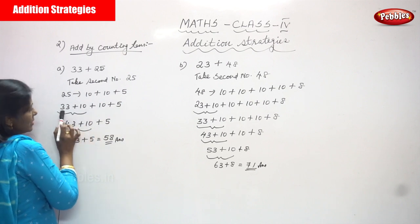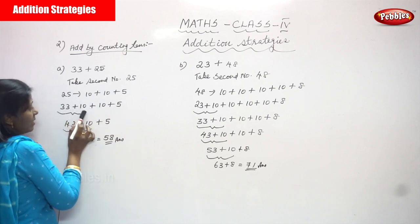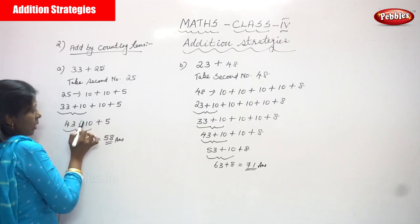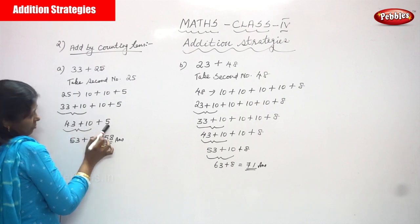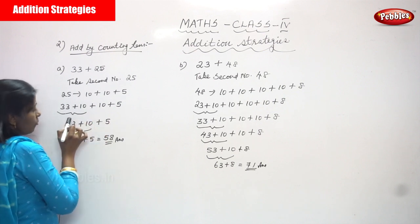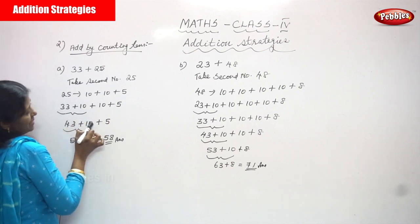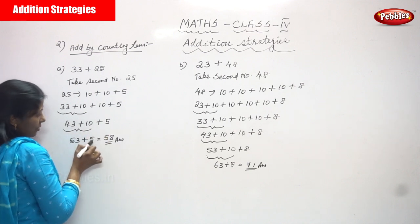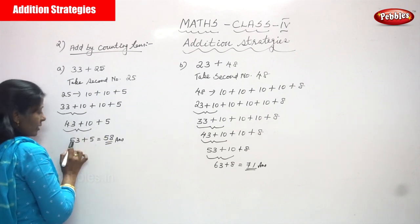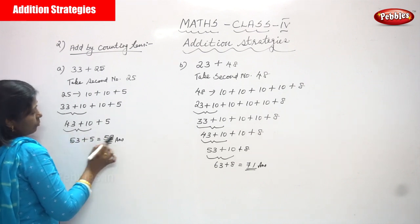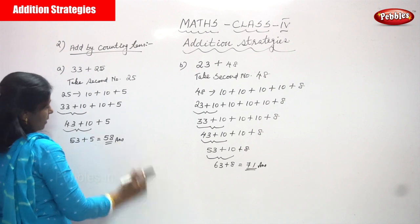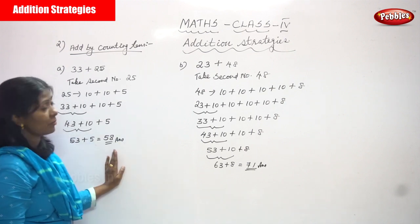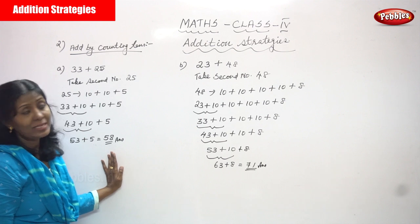33 plus 10 gives 43. Then 43 plus 10 gives 53. Finally, 53 plus 5 gives 58. So 58 is the answer for 33 plus 25.